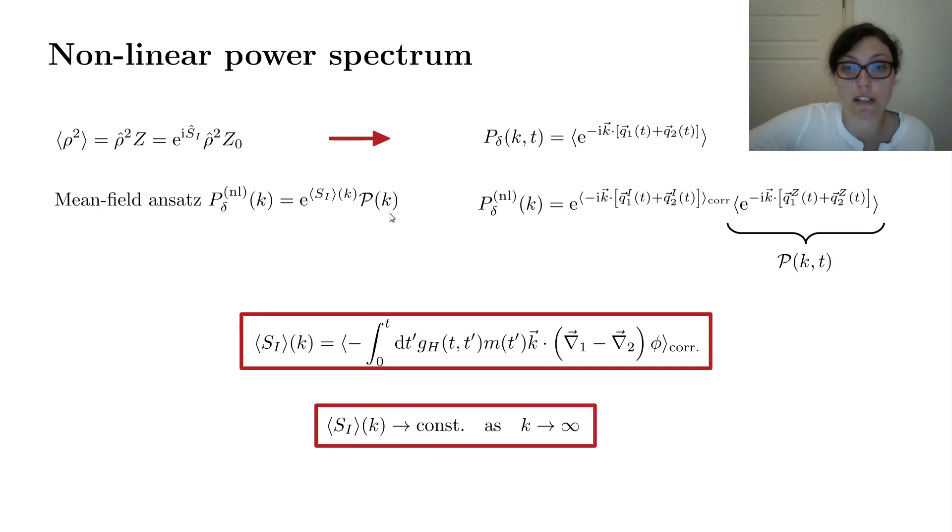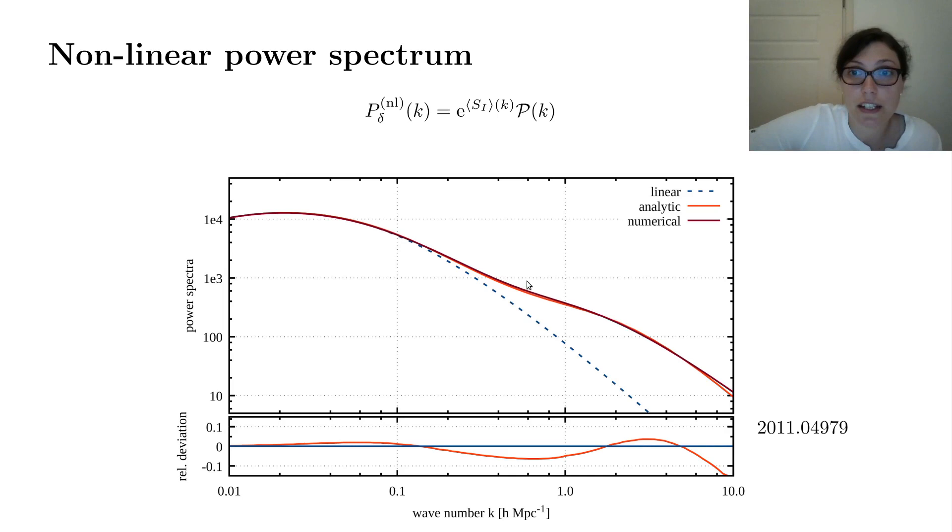Here you see our result. In orange, you see the analytic non-linear power spectrum from mean field and kinetic field theory compared to a numerical power spectrum. As you can see, they are very close to each other, and the relative deviation is less than 10% up to wave numbers of k equal to 10.